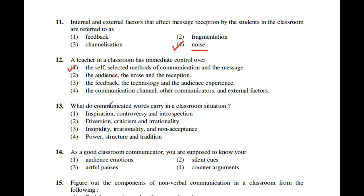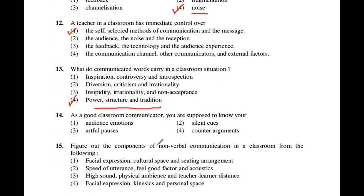Question number 13: What do communicated words carry in a classroom situation? The options are: inspiration, controversy and introspection; diversion, criticism and irrationality; insipidity, irrationality and non-acceptance; or power, structure and tradition. The fourth option — power, structure and tradition — is the correct answer.